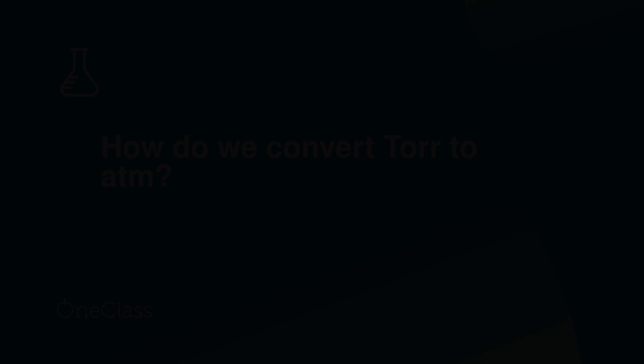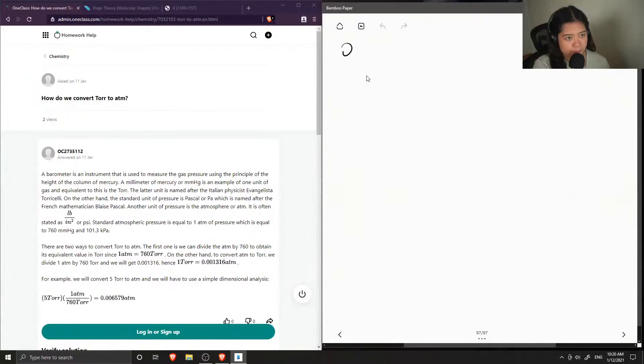Okay, so on to question number two, which is how do we convert TOR to ATM? So first, let's write down the conversion factor. So 760 TOR is equal to 1 ATM.